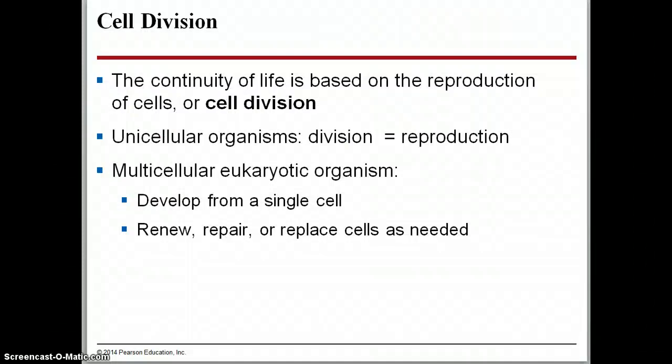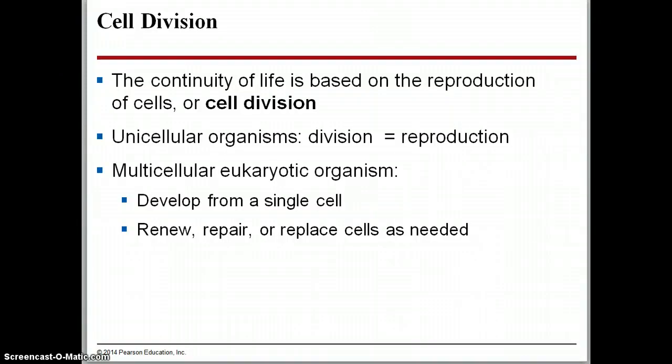Chapter nine on the cell cycle. Cell division is super important in order for life to exist. Life being able to continue is based on the cell's ability to reproduce. For unicellular organisms, this division is actually their form of reproduction.